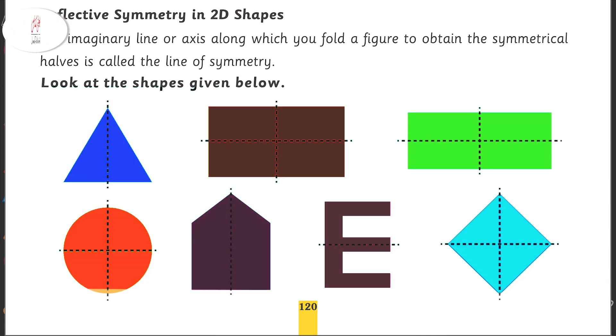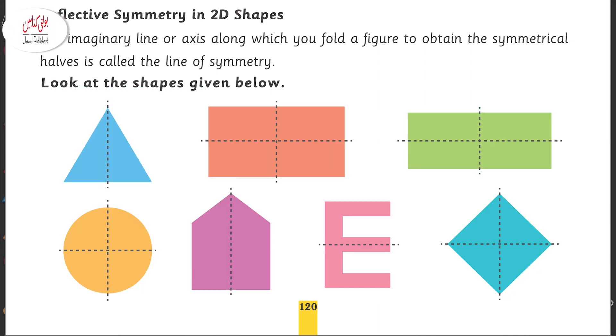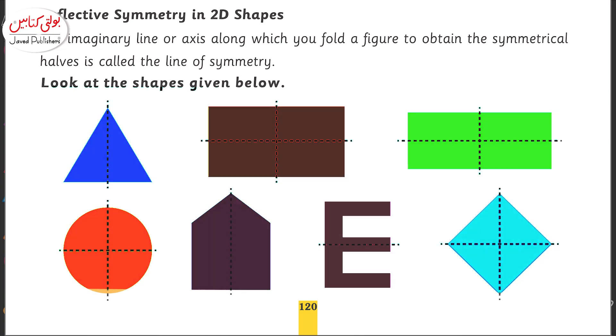You have some shapes in your text in which we have drawn a line of symmetry where objects are divided into equal parts.